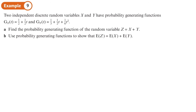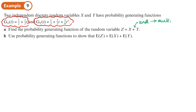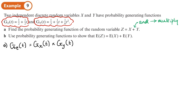Two independent discrete random variables X and Y have probability generating functions given here. This is the PGF for X and this is the PGF for Y. We need to find the probability generating function of the random variable Z = X + Y. You can think of this plus as meaning 'and', and when we have 'and' in probability, we multiply. So I need to multiply these two probability generating functions. The PGF for Z equals the PGF for X times the PGF for Y.